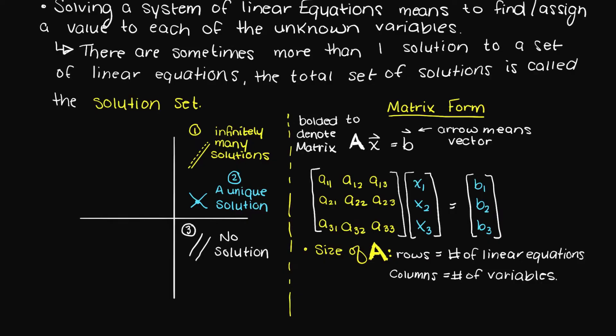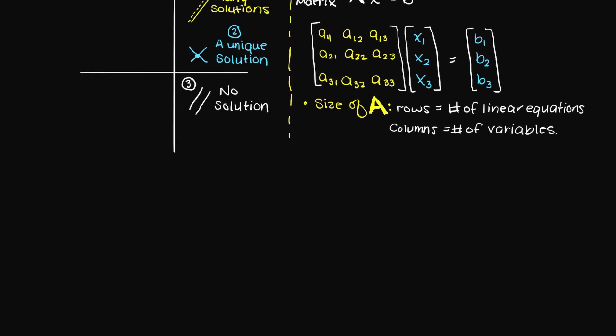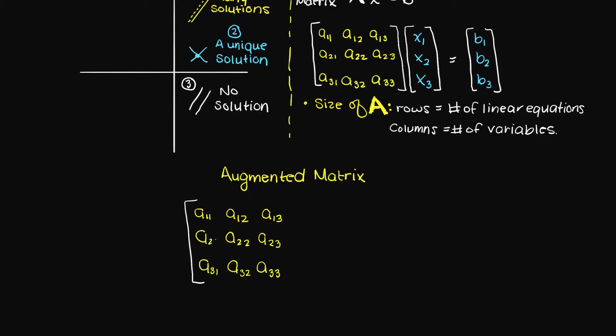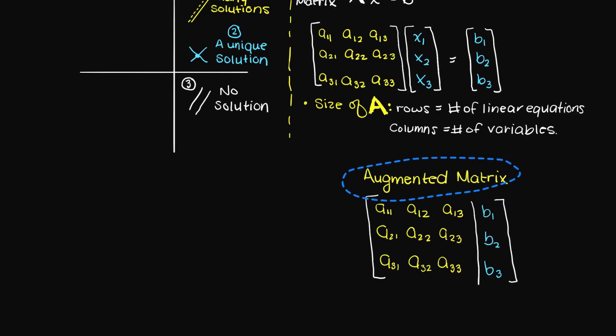This matrix equation can also be represented in an augmented matrix, which basically means the same thing — it just visually simplifies things. As you can see, the augmented matrix looks very similar, except the variables column is absent and is essentially replaced with a line.